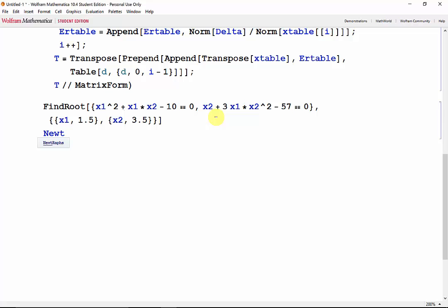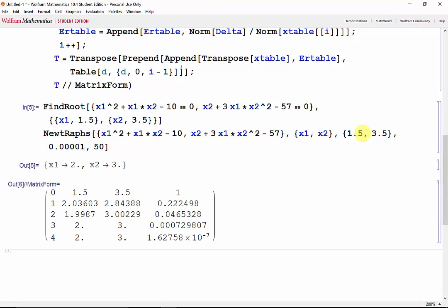And then we'll use our Newton-Raphs method with the same functions. So we'll take out the zeros. And our two variables x1 and x2, we'll go with the same initial guesses. We'll have a max error of 0.00001 and we'll go up to 50 iterations. Now shift enter. And we get the same result as the FindRoot function.